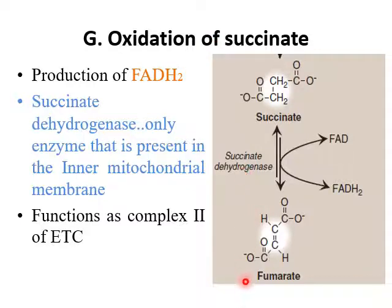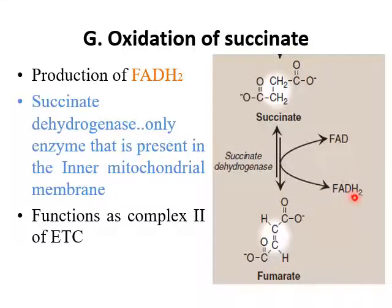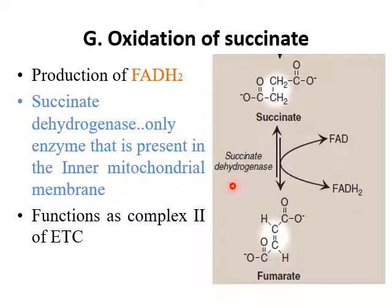The next step is production of fumarate from succinate. The enzyme succinate dehydrogenase converts succinate into fumarate, and FAD is converted into FADH₂. This is the only step of Krebs cycle where one molecule of FADH₂ is obtained. Importantly, succinate dehydrogenase is the only enzyme attached to the inner mitochondrial membrane — all other Krebs cycle enzymes are found in the mitochondrial matrix. It also functions as complex II of the electron transport chain.